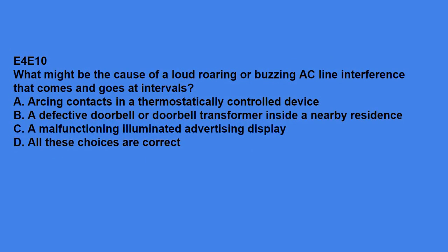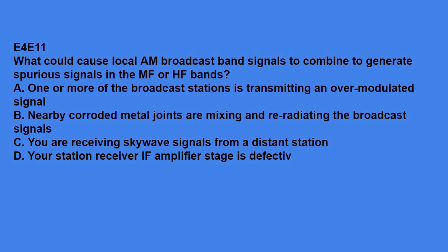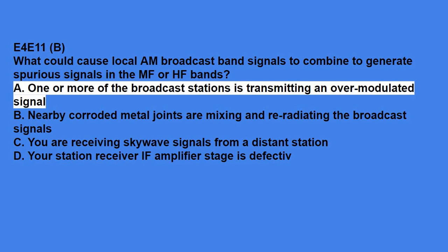E4E10, what might be the cause of a loud roaring or buzzing AC line interference that comes and goes at intervals? Answer is, all of these are correct, which is arcing contacts in a thermostatically controlled device, a defective doorbell or doorbell transformer inside a nearby residence, or a malfunctioning illuminated advertising display. E4E11, what could cause local AM broadcast band signals to combine to generate spurious signals in the MF or HF bands? Answer is, one or more of the broadcast stations is transmitting an over-modulated signal.